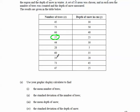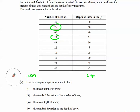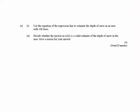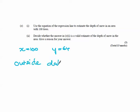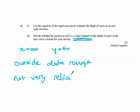Looking at the values for x that we've already got: the smallest value is 27 and the largest value is 75. We just worked out what it would be if x was 100 — it would be 64 — but our data range goes from 27 to 75. So 100 is well outside that data range. What we're actually doing is extrapolating. Our estimate of x = 100 giving y = 64 is outside the data range, so that means our estimate is not a very valid one — not very reliable.